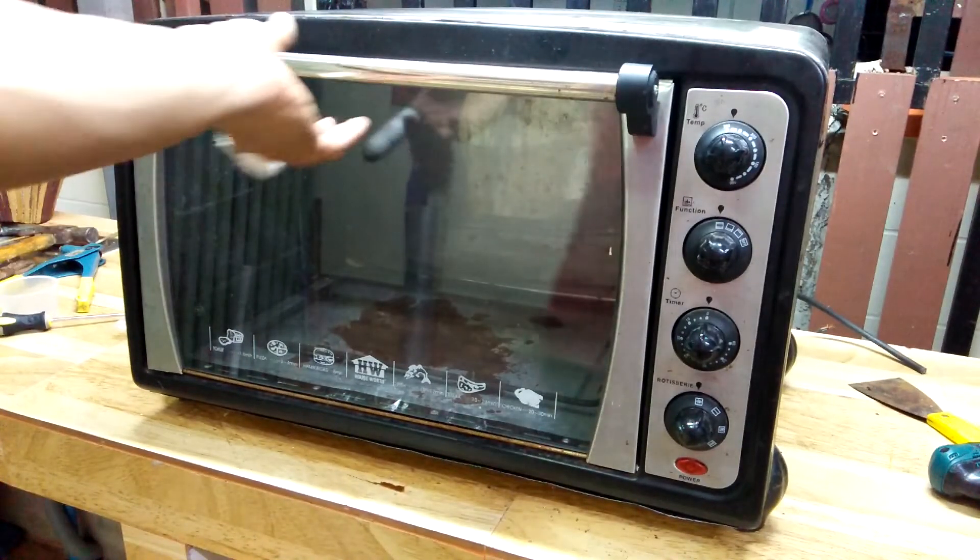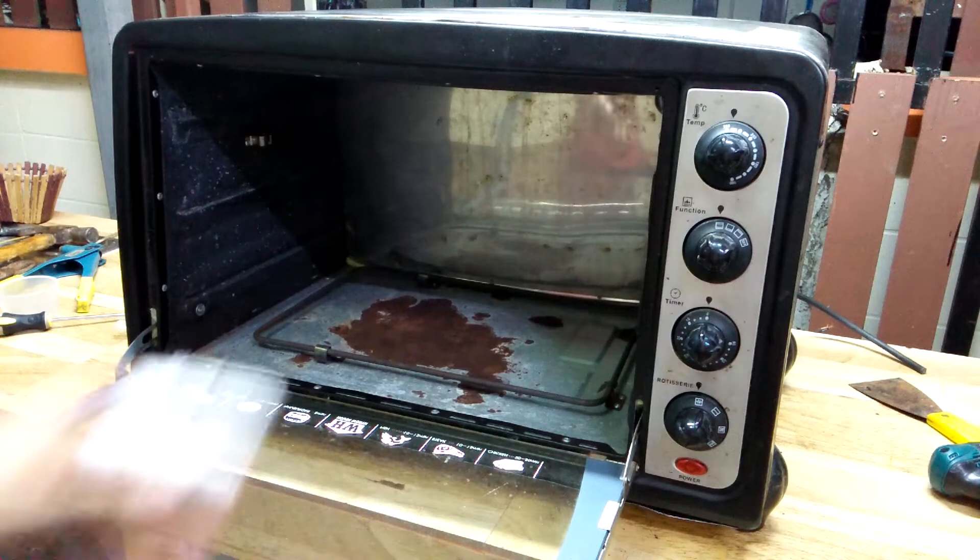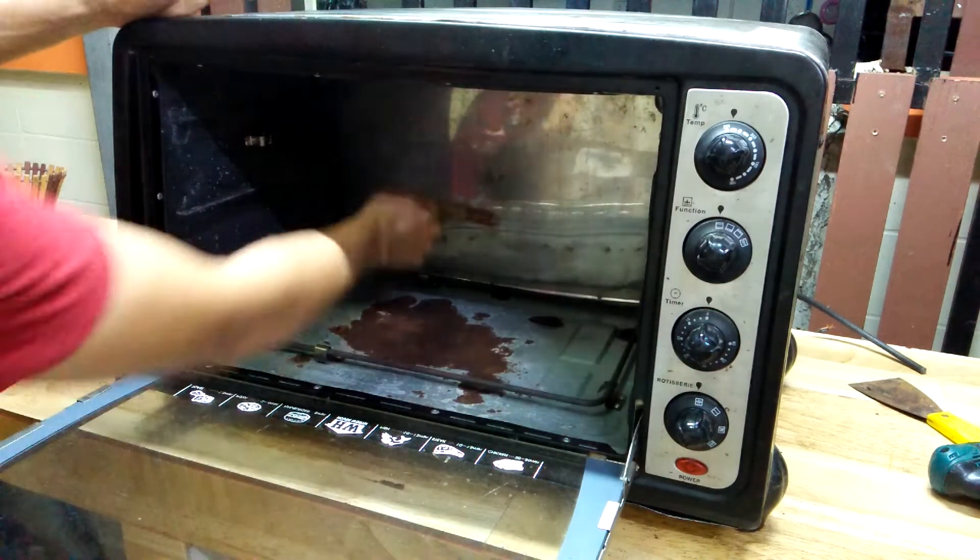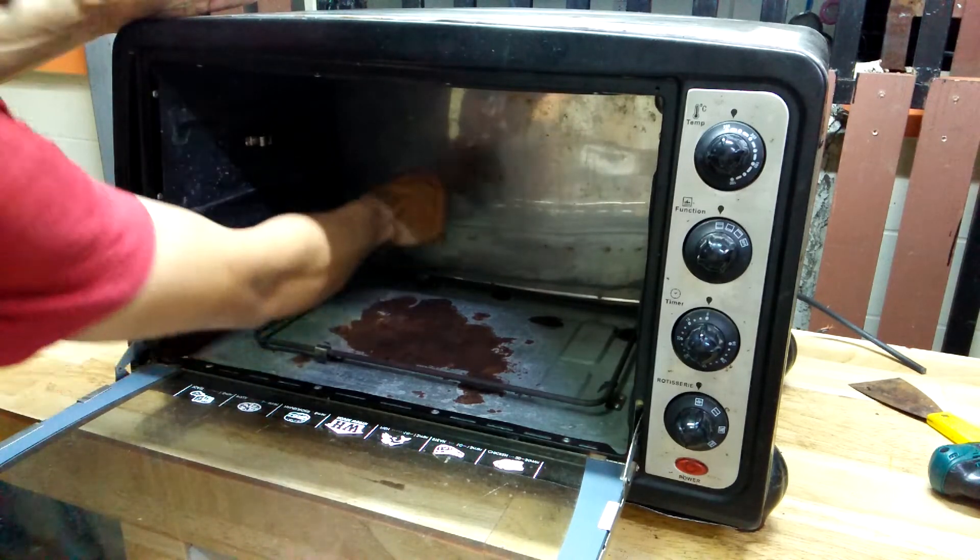And there you go, ladies and gentlemen, an improved countertop kitchen oven for powder coating. Double walled all the way and now stuffed with fiberglass insulation.